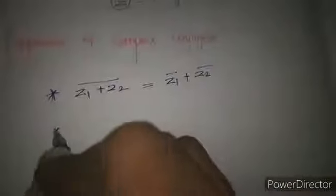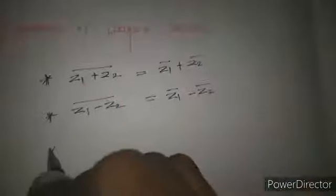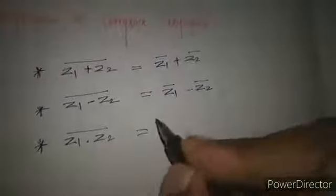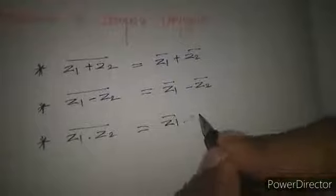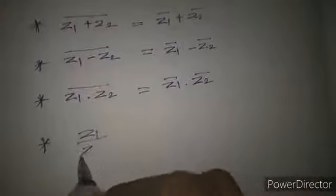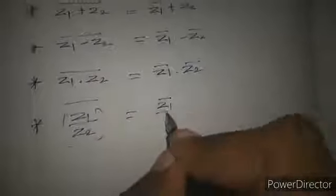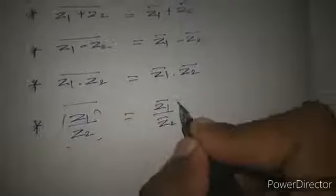The next one, subtraction: z1 minus z2 whole bar equals to z1 bar minus z2 bar. The third one, multiplication: z1 into z2 whole bar equals to z1 bar into z2 bar. The fourth one, division: z1 by z2 whole bar equal to z1 bar by z2 bar. Understand?